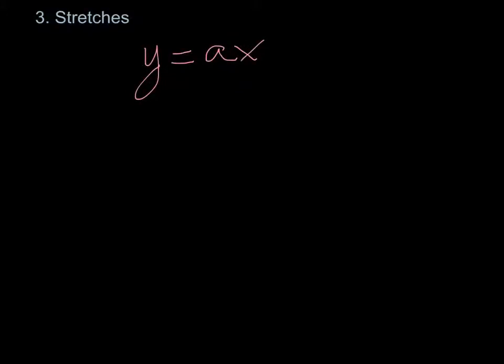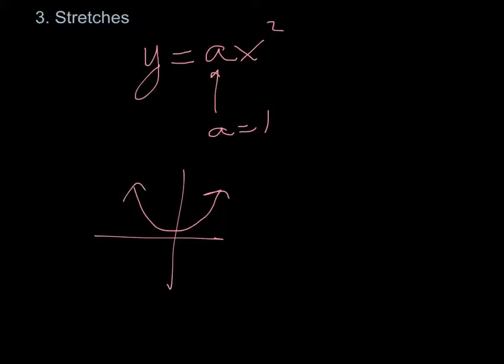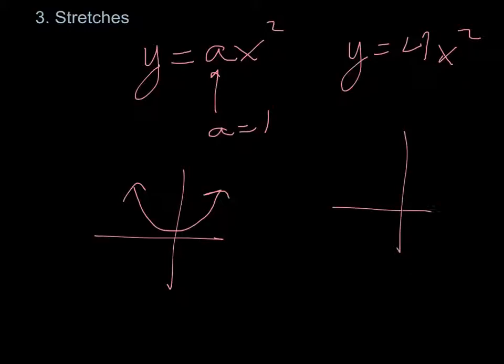Next are stretches, which are also a bit counterintuitive. For y equals ax squared, if a equals 1 it's the standard parabola. If a is greater than 1 — say y equals 4x squared — you're making the parabola narrower. The bigger a is, the narrower it gets. You can verify by plugging in x=2: standard gives y=4, but 4x² gives y=16, so you go up much more, making it narrower.